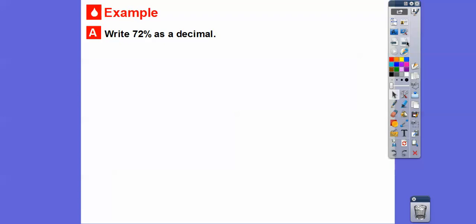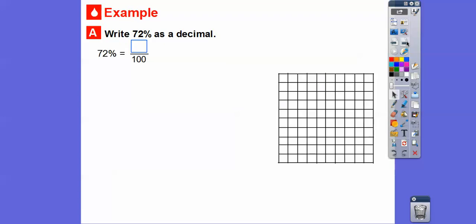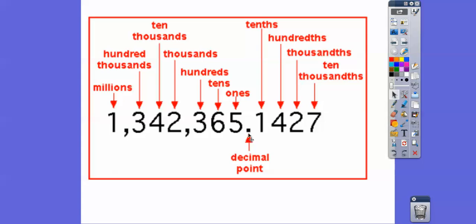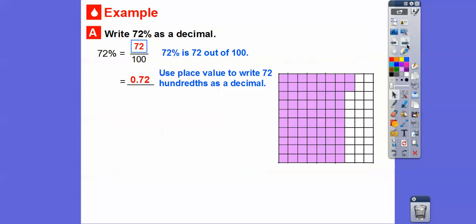All right, so let's go ahead and write 72% as a decimal. So what we can do is first change it into a fraction. 72% is 72 hundredths. And then we can use place value to write 72 hundredths as a decimal. Remember place value right here? So here's the decimal. This is the tenths spot. This is the hundredths spot. So 72 hundredths, the two has to end right here. So it would be 0.72 hundredths right there. So 72% is the same as 0.72. Easy enough.